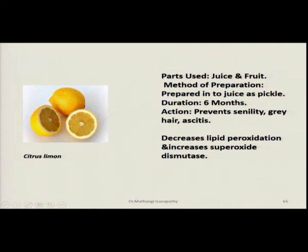Citrus lemon — the juice and fruit are used, taken either as juice or as a pickle, for a period of 6 months. It prevents senility, prevents grey hair, and treats azitis. Scientifically, it decreases lipid peroxidation and increases superoxide dismutase.